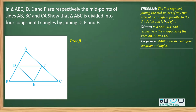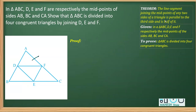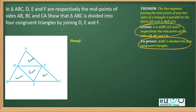As you can see, there is a triangle given here. D is the midpoint of AB, E is the midpoint of BC, and F is the midpoint of AC. We have these lengths marked as equal, and what we have to prove is that all four triangles formed are congruent. This is what's given, and we need to prove the triangle is divided into four congruent triangles.